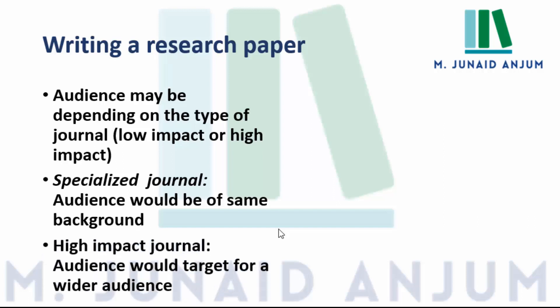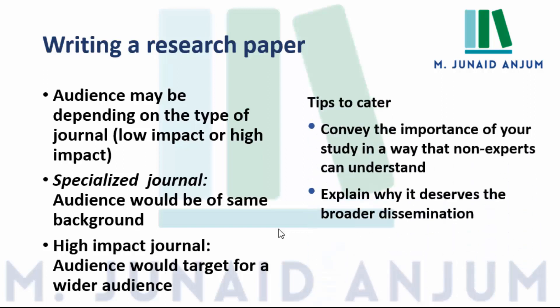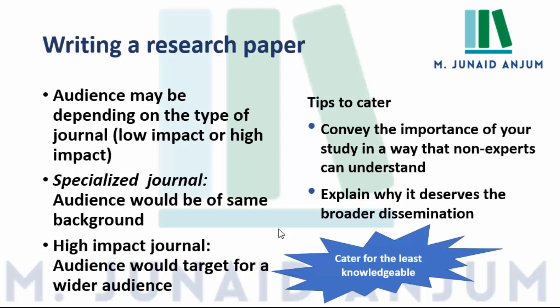However, if you are writing your article for a high impact factor journal, your audience may differ. They may have a wider audience because they are covering different topics, and because of that they are getting more citations and have a high impact factor. So what are the tips to cater to this? You should convey the importance of your study so that a person who does not belong to your field can also understand your article. You should explain why your article deserves broader dissemination, and cater the article according to the least knowledgeable person.